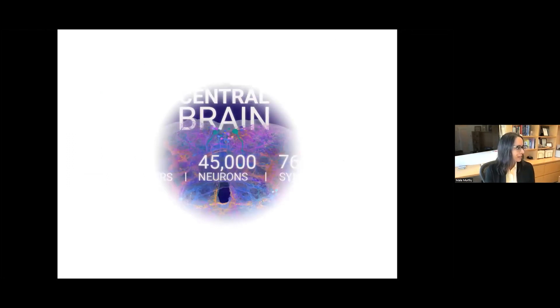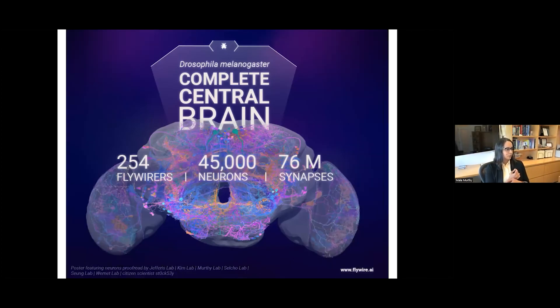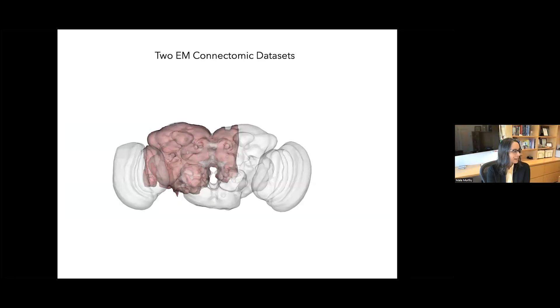As Amy announced to you all probably recently, we recently completed through your efforts and efforts of scientists together the proofreading of the entire central brain. That's this piece of brain here. It doesn't include the optic lobes, which has been a primary focus of your effort, but we're making great progress on finishing those as well. It's been really fast-paced progress.